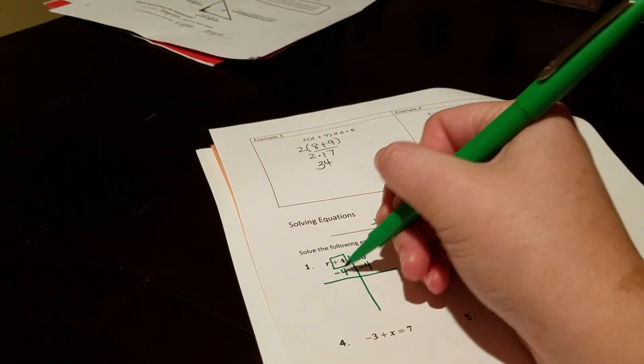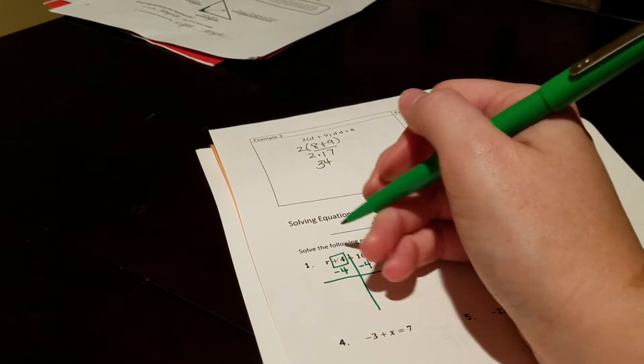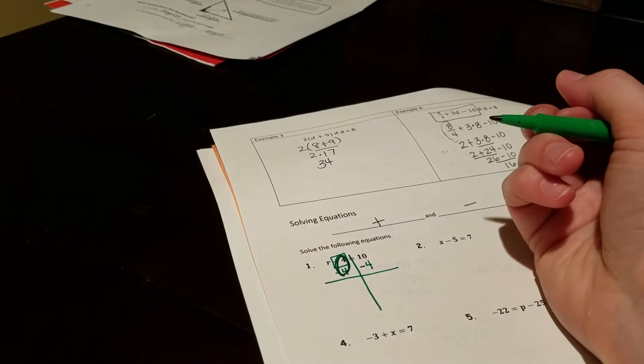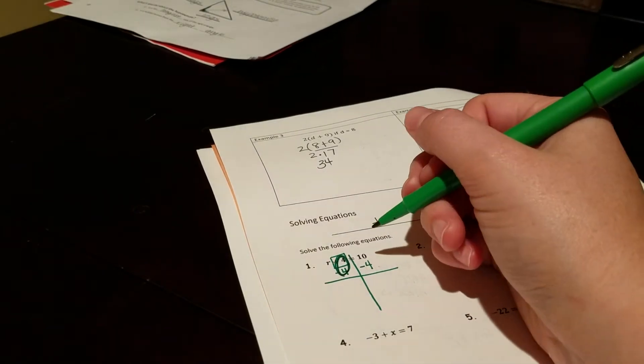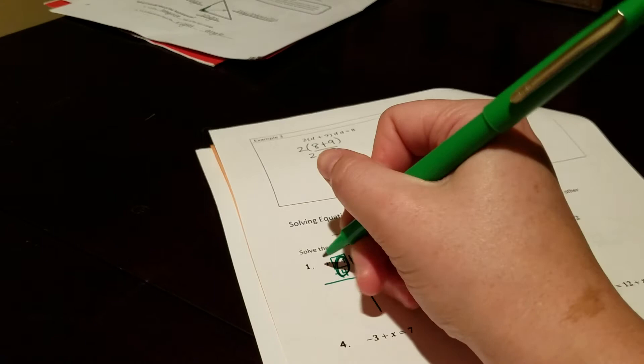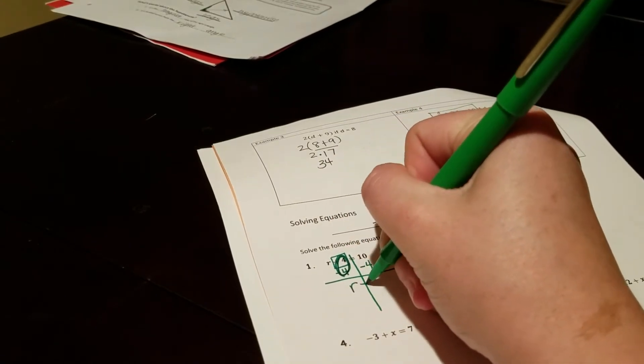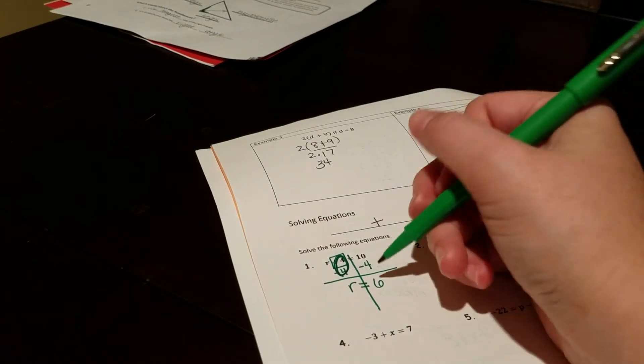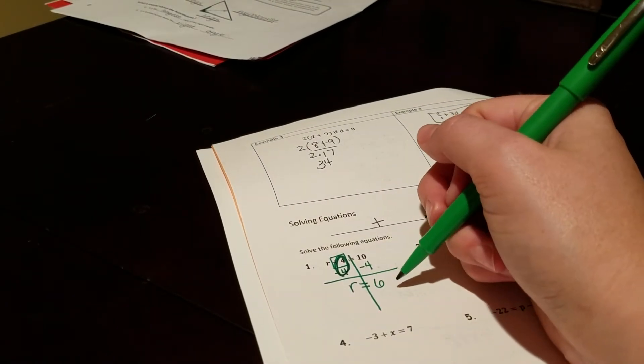Since I have a minus 4 and a plus 4, those are additive inverses, so when I actually take care of them, I get a big fat zero. So they really just go away because I don't have to write r plus zero, so I can just write r. And over here, 10 minus 4 is 6. We just solved to find that r is 6.